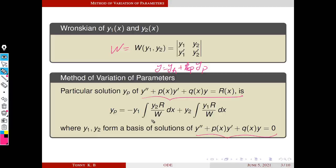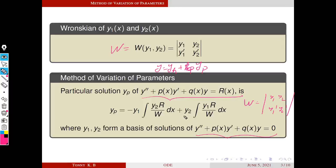W is the Wronskian of these two basis solutions: W equals the determinant of y1, y2, y1', y2'. So first we solve the corresponding homogeneous equation and find two solutions Y1 and Y2 that form a basis — one is not a scalar multiple of the other. Then we find the Wronskian and substitute in the formula. R is the right-hand side of the given ODE.